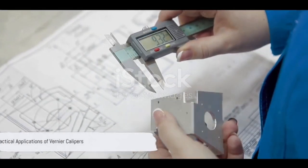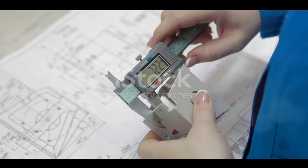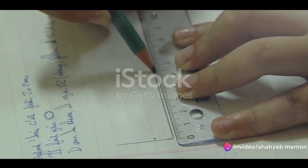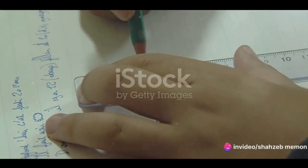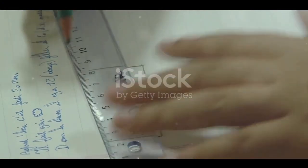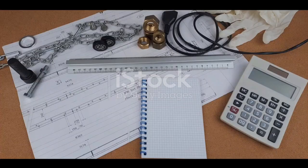So, where do we use these vernier calipers in real life? Well, the applications are wide-ranging. In the world of manufacturing and quality control, dimensional inspection is key. Vernier calipers are used to measure the dimensions of objects with high precision, ensuring they meet design specifications.